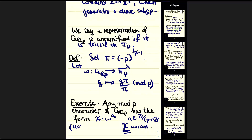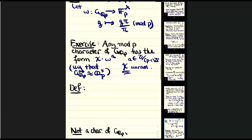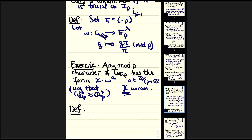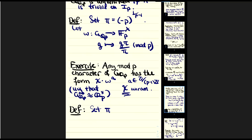Now I've described the one-dimensional mod-p representations of G_{Q_p}. Let me set π_2 to be a (p²−1)-th root of −p, chosen compatibly with π, so that π_2^{p+1} = π. I'm going to define ω_2 to be the function on G_{Q_p} sending g to g(π_2)/π_2. Just as before, this is a (p²−1)-th root of unity, which I can reduce mod p into F_{p²}^×.